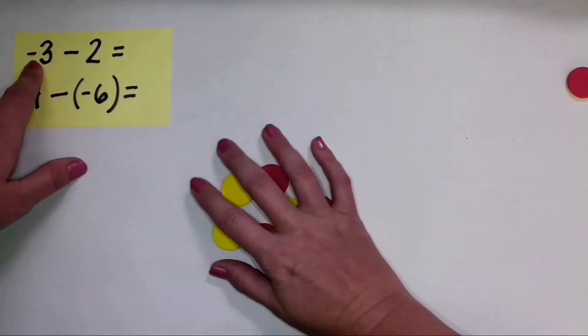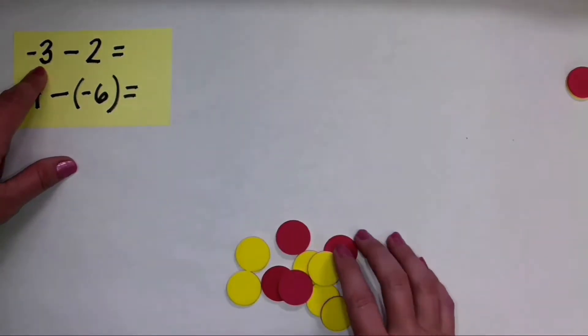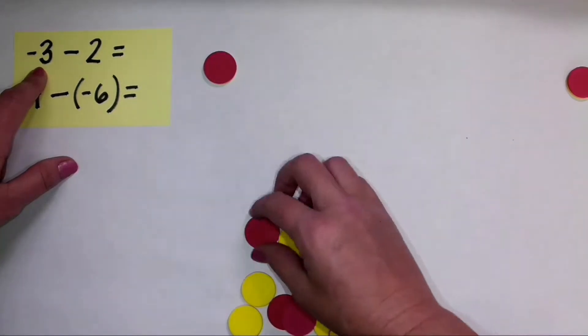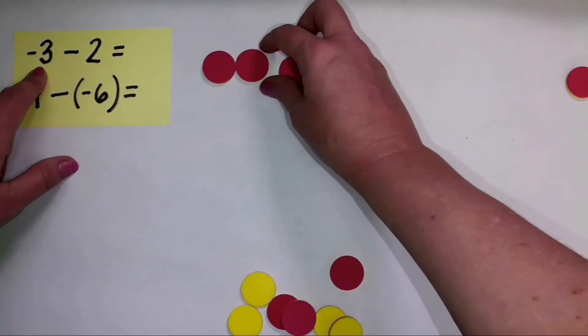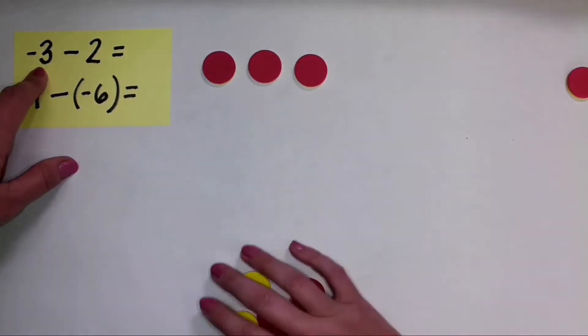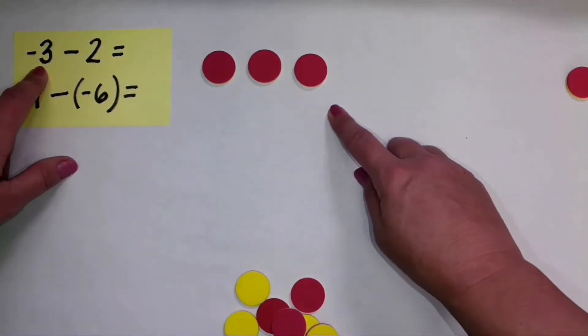So let's go ahead and set up this problem. I'm going to start with negative three. So that means I'm going to place three counters with the red side showing. So I have negative three.